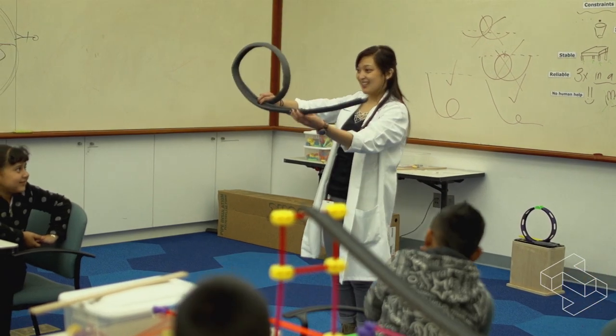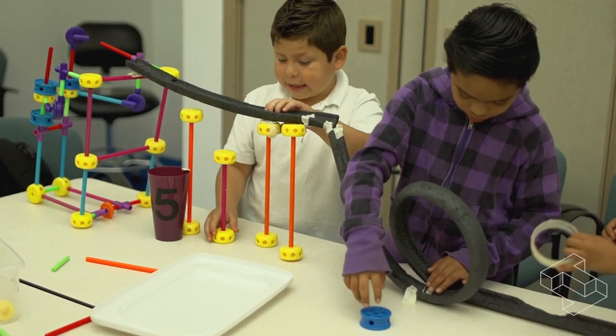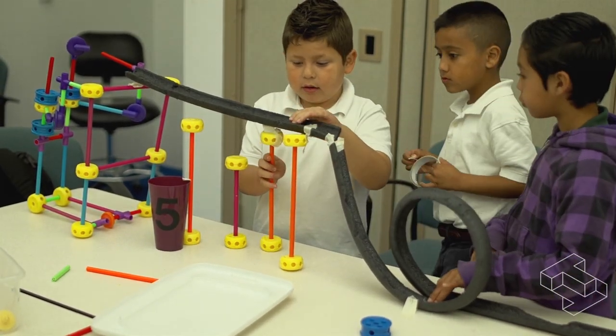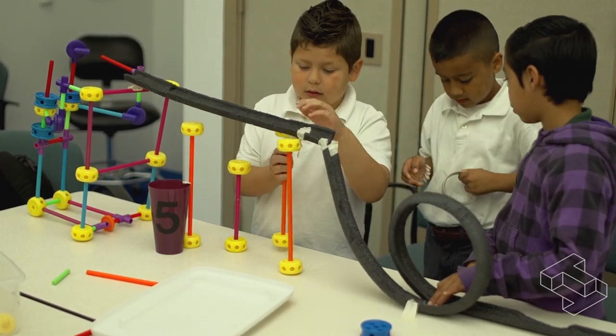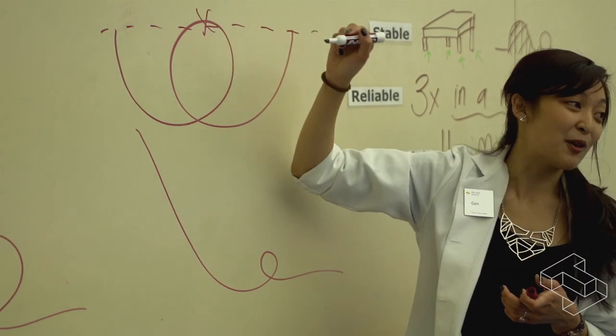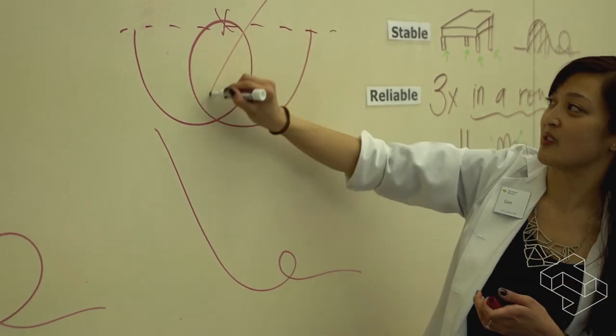To do this activity you're just going to need any sort of flat surface. You're also going to want to give your students some constraints on the building of their roller coasters. We always like to use four simple constraints.